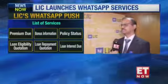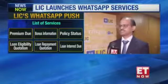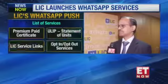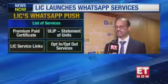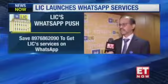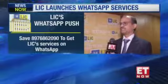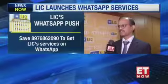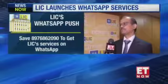To start with, we have started providing information required by the customer about their policies and the services available through WhatsApp as the first phase. All customers have to do is save LIC's WhatsApp number, which is 8976-862090. They save it on their mobile and send a 'hi' to LIC. They will get the options available through a bot — a list of services available. They can first know the details of their policies, and all the policies will be listed. They can choose any policy and find out what the premium payable is.